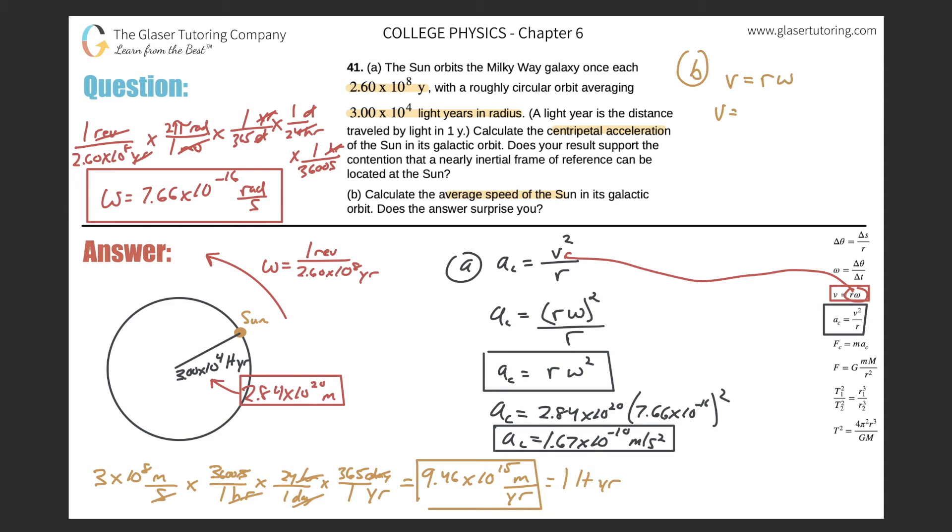So we know the radius. It's going to be the same value as 2.84 times 10 to the 20th. So the velocity here will equal 2.84 times 10 to the 20th multiplied by 7.66 times 10 to the negative 16th. And we get a value of 2.18 times 10 raised to the fifth, and that is in meters per second.